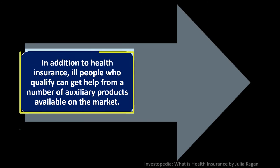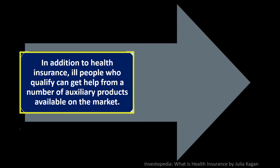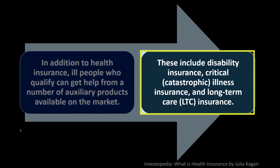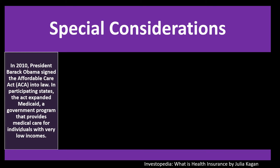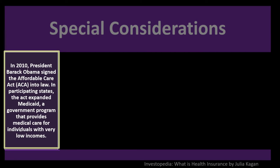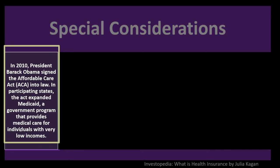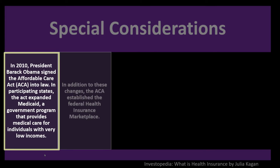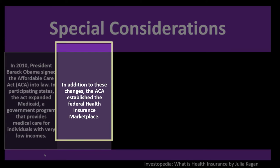In addition to health insurance, people who qualify can get help from auxiliary products including disability insurance, critical or catastrophic illness insurance, and long-term care (LTC) insurance. In 2010, President Barack Obama signed the Affordable Care Act (ACA) into law. In participating states, the act expanded Medicaid — a government program that provides medical care for individuals with very low incomes — and established the federal health insurance marketplace.